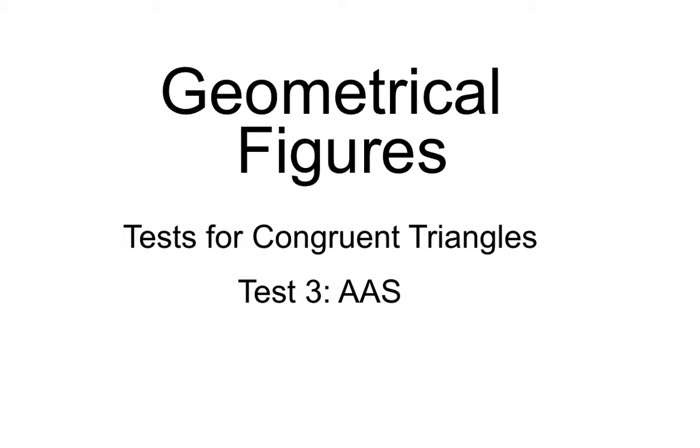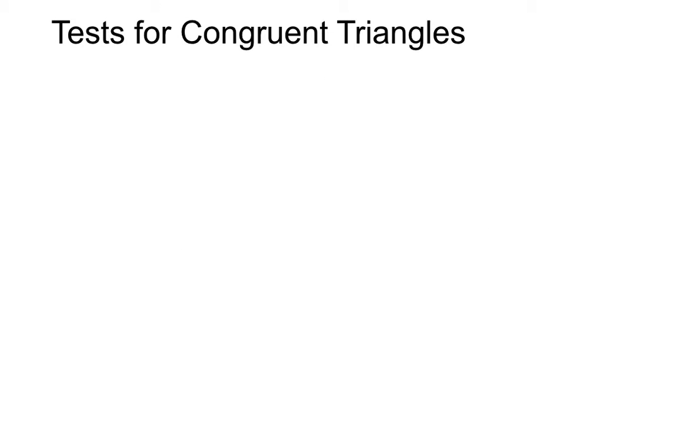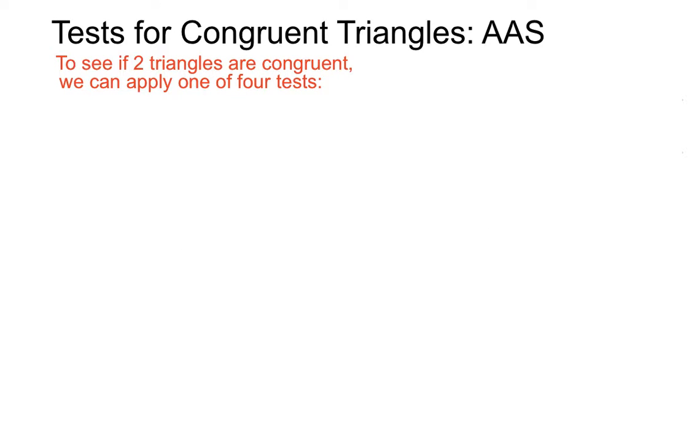In geometrical figures, we're looking at the third test for congruent triangles, known as test 3: AAS. To see if two triangles are congruent, we can apply one of four tests: SSS, SAS, AAS, and we'll go on to look at RHS.